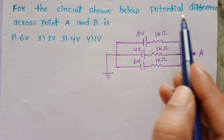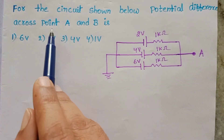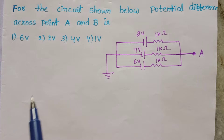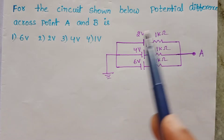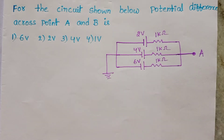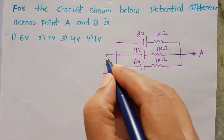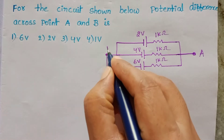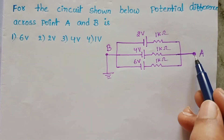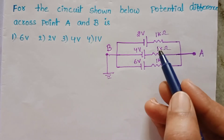For the circuit shown below, the potential difference across points A and B is to be found. Observe the circuit diagram — this point is A and this point is B. We have to find out the potential difference across points A and B.